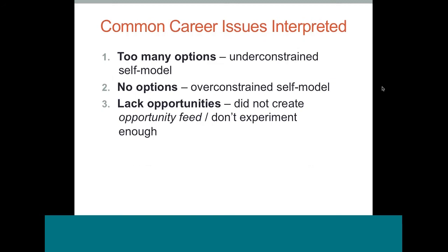The second common problem is there are no options. You might say: the more I learn about myself and what I want, the pickier I get and the harder it is to find something that fits everything. Funnily enough, most people experience both problems simultaneously — they both under-constrain and over-constrain themselves. Usually they first under-constrain themselves, then over-constrain themselves, so they feel like there are too many choices and at the same time nothing works.